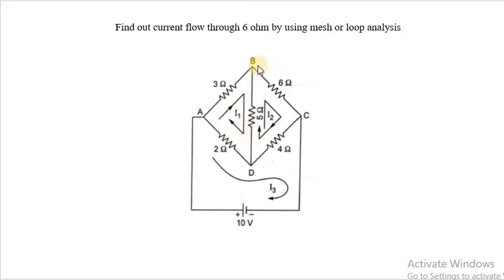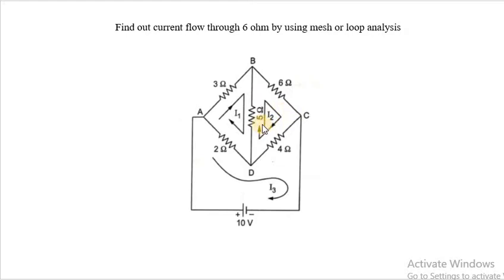The second loop starts from B to C, then D, and then back to B. So loop B, C, D, B consists of resistances 6 ohm, 4 ohm and 5 ohm. This is loop number 2, which carries loop current I2, also in the clockwise direction.